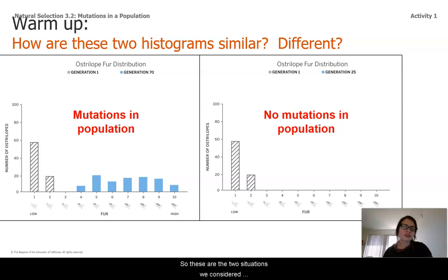So these are the two situations we considered earlier about population B being put into a cold environment. In one situation they could mutate and the other ones they couldn't. Spend a second looking at them and thinking, how are these histograms similar and how are they different?